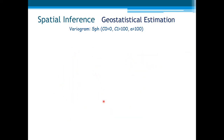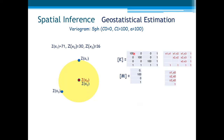Our last exercise consists of estimating the unknown value exactly at a sample location. For example, zx2 is exactly at the spatial location of zx0. This is reflected in the covariance vector M — the covariance between the samples and the point to be estimated — which is the maximum possible covariance between zx2 and zx0.